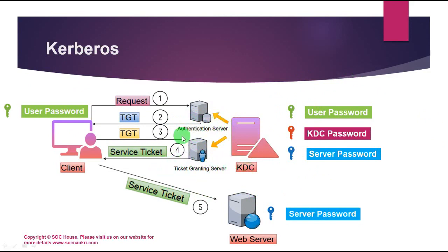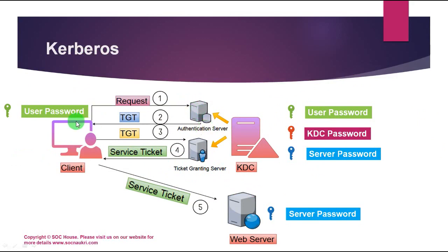The Authentication Server is responsible for providing the TGT — Ticket Granting Ticket — to the user. The TGS, or Ticket Granting Server, is responsible for providing the service ticket to the user for accessing the requested services. The first step: the client sends a request to the Authentication Server and receives a TGT ticket. This ticket is to prove the identity of the user only.